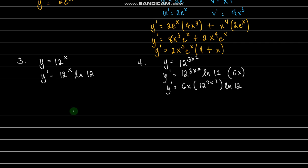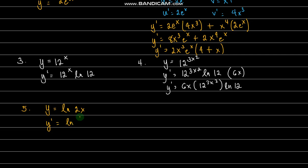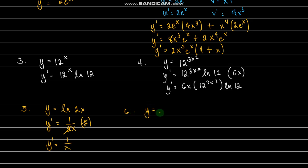Now let's look at logarithmic functions, focusing on ln. How about y equals ln of 2x? That's very simple — we know that the derivative of ln x is 1 over x. So y prime equals 1 over 2x times the derivative of 2x, which is 2. So y prime equals 2 over 2x, which simplifies to 1 over x.